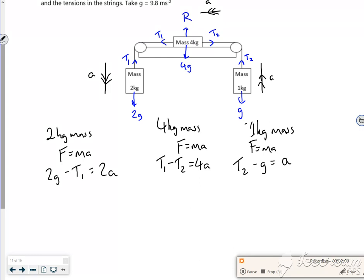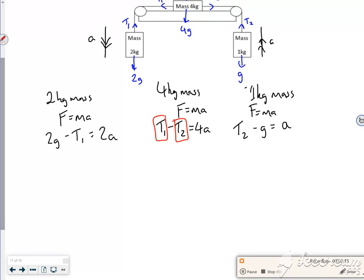Right now then, if you look in the middle, I've got two unknowns, T1 and T2. But I've got two equations here. Look, so I've got 2g minus 2a is T1.